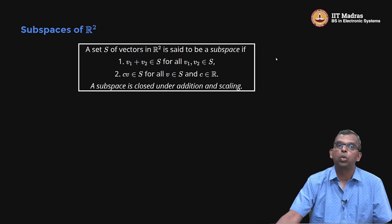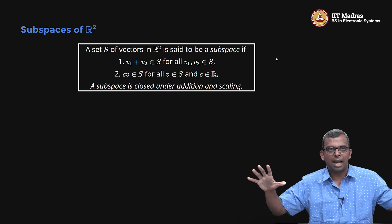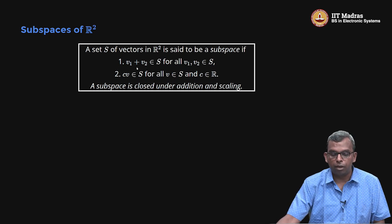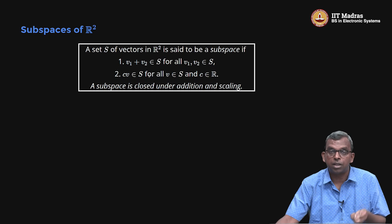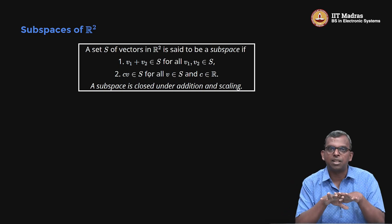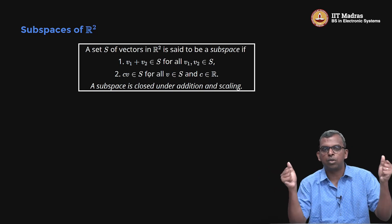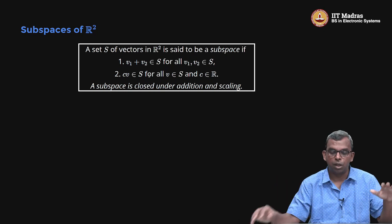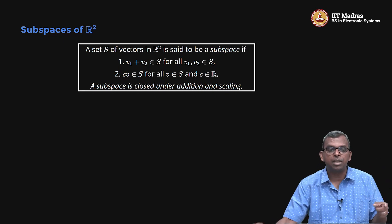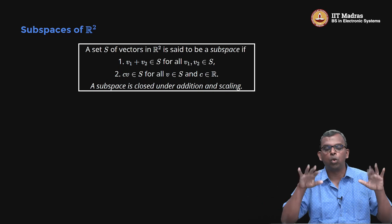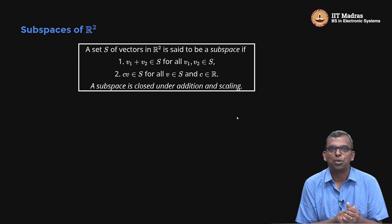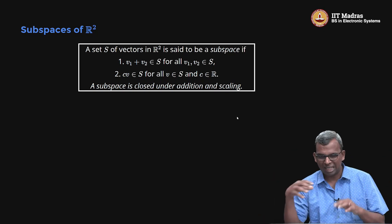Now, what are subspaces of R2? R2 is a big space and it has some interesting subspaces. A set S of vectors in R2 is said to be a subspace if, when you add two vectors in the subspace, you stay within the subspace, and when you scale a vector in the subspace, you still remain within the subspace. It is like a mini vector space inside a bigger vector space. A subspace is closed under addition and scaling — that is what makes subspaces very, very interesting.